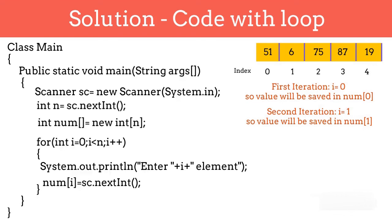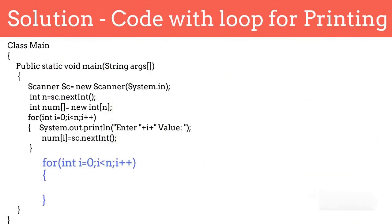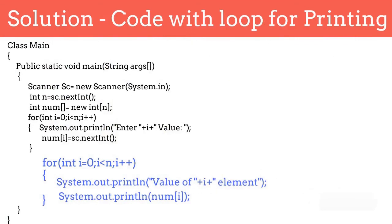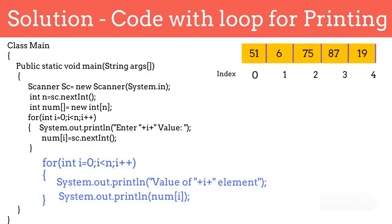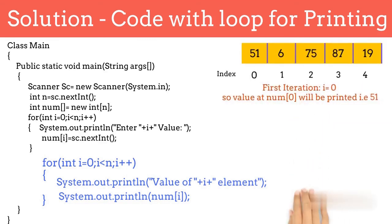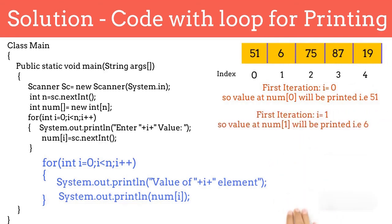You can access the elements using indexes like num[0] or num[1], or you can write a loop for it. Let's write a loop for printing the elements. Again, we write the loop from 0 to n. The first statement will print the value of index i, and the second statement will print the value stored at that location, retrieved using num[i], placed inside a System.out.println statement. For the first iteration, i equals 0 and we print the value at the 0th location; for the next iteration, i becomes 1 and we print the value at the first location, and so on.